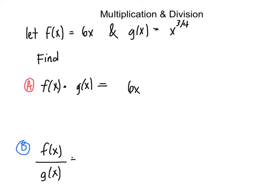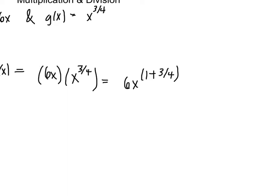We have 6x multiplied by x to the 3 fourths. So when we multiply our exponents, we add them. So 6x raised to the 1 plus 3 fourths, which equals 6x to the 7 fourths.